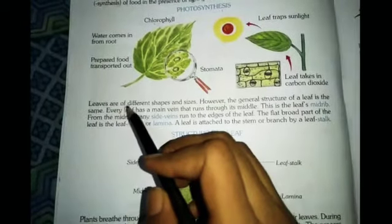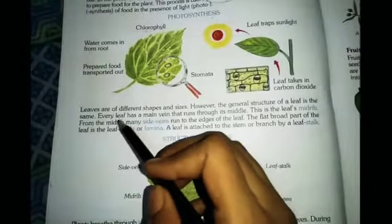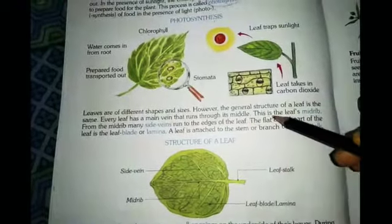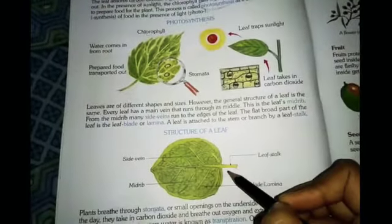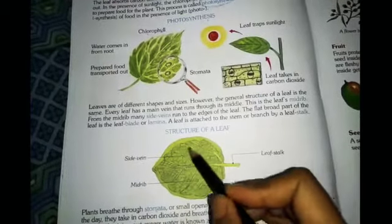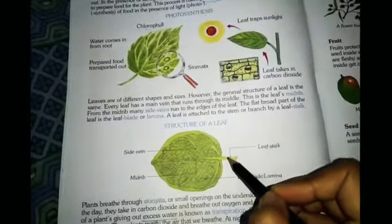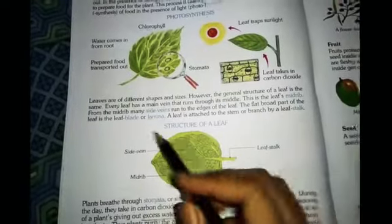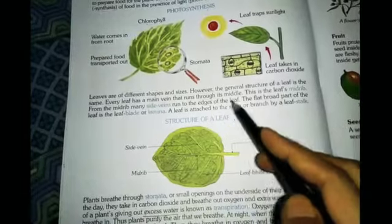Leaves are of different shapes and sizes. However, the general structure of a leaf is the same. Every leaf has a main vein that runs through its middle — this is the middle vein. The leaves have many veins. The middle vein is called the midrib. From the midrib, many side veins run to the edges of the leaf.